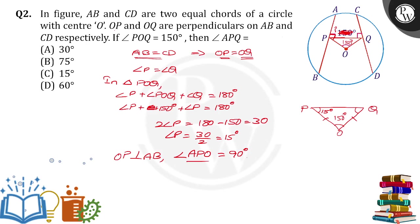Angle APO is divided into two parts: angle APQ plus angle QPO equals 90 degrees. We found that angle QPO equals 15 degrees, so angle APQ plus 15 equals 90.